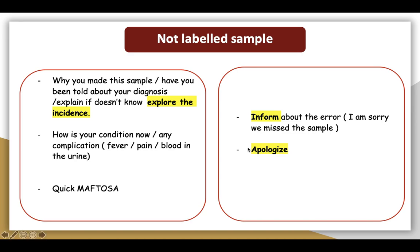The next example of a medical error station is an unlabeled sample. In this scenario, the patient was diagnosed with glomerulonephritis and a kidney biopsy sample was taken in order to decide which type of glomerulonephritis they have. Unfortunately, the sample was not labeled and was lost, so no test results are available. You need to tell the patient all of this and convince them to undergo the procedure again — take another sample in order to decide the next step in management. Start by following our approach: make a quick recap about what happened and why the sample was taken — explore the incident itself.